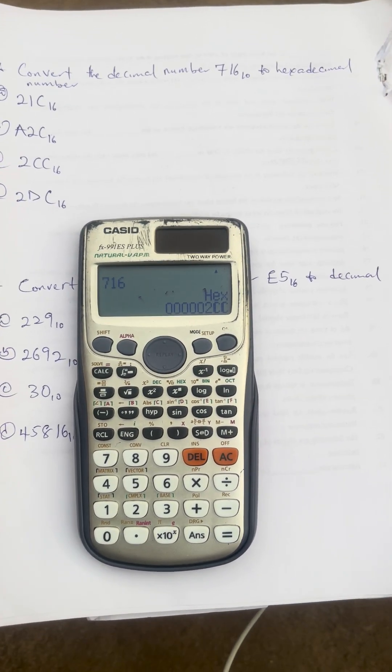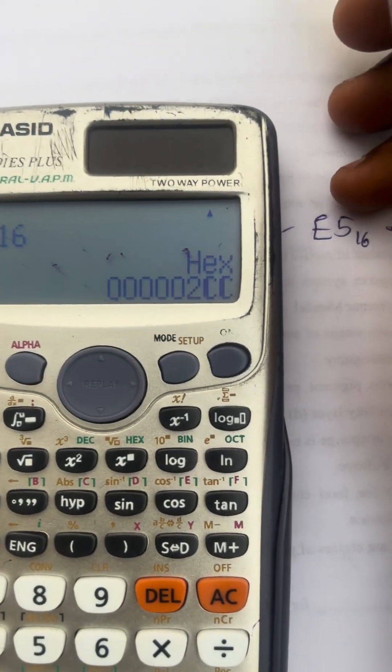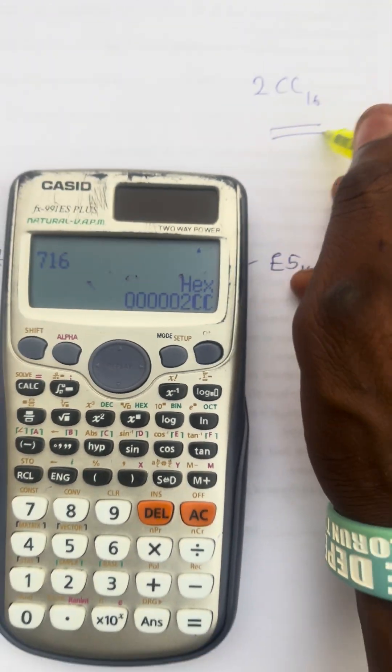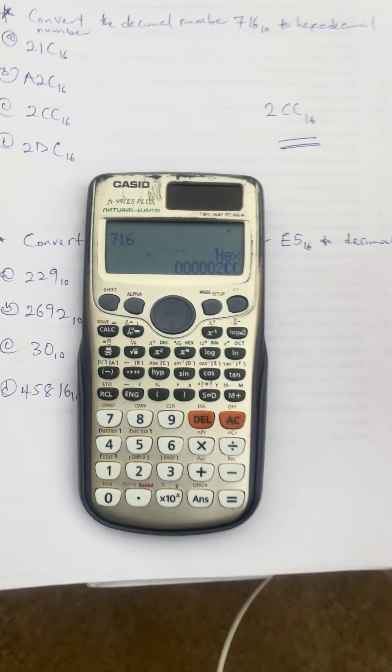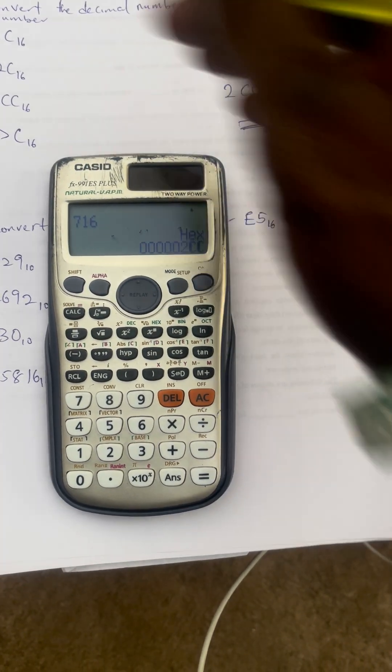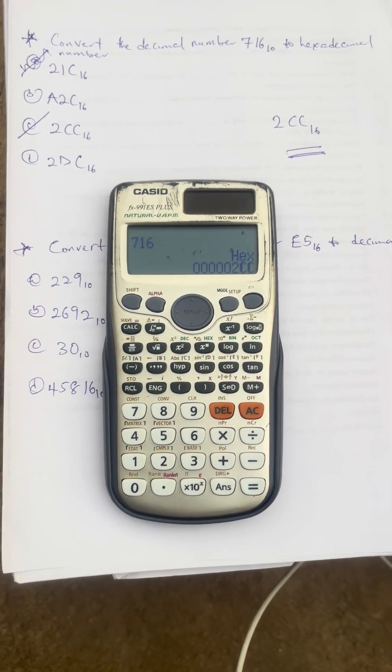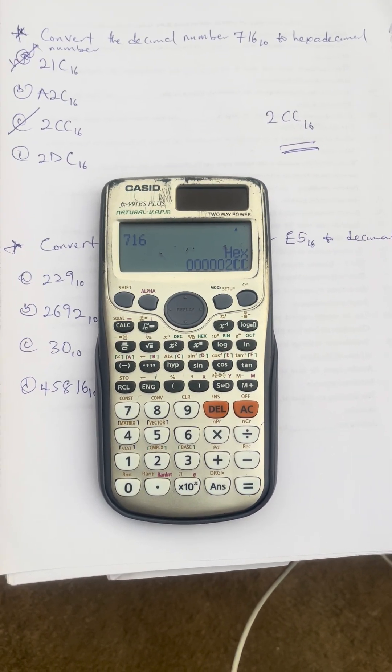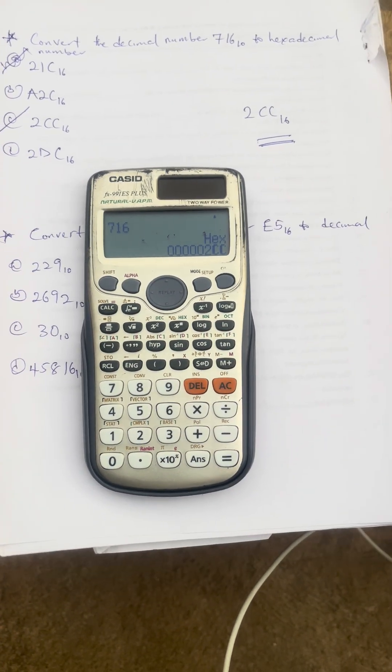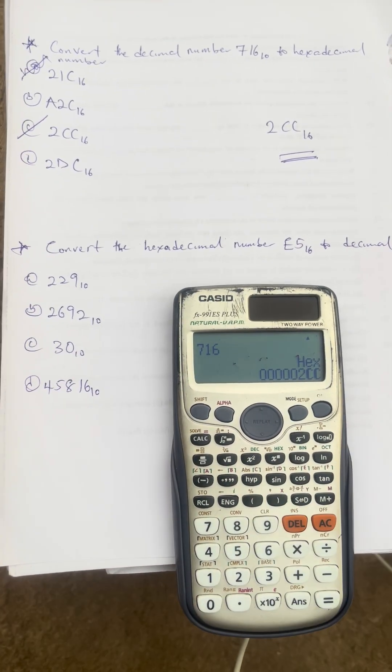Then when you press, you observe that what you have on your calculator is 000, you can see that you have 2CC. So that is why it is 2CC basically because X is what, hexadecimal. And that's why the answer is option C, 2CC. Can you see, option A is 21C, so option C is correct answer which is 2CC basically.